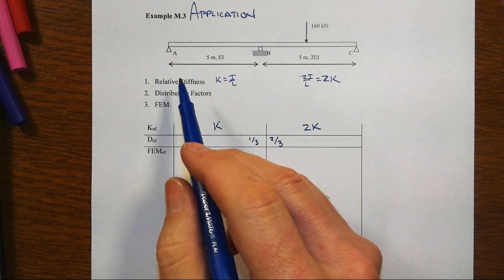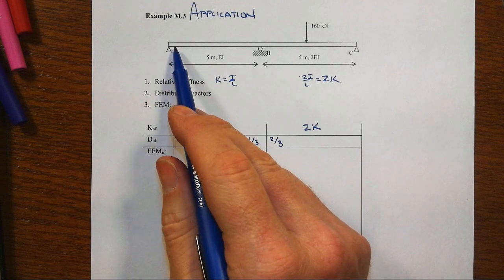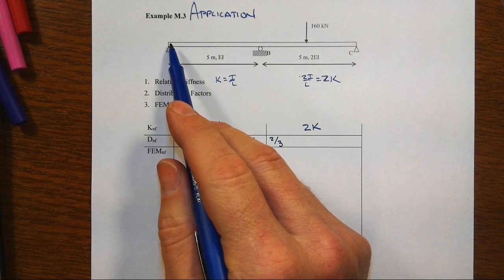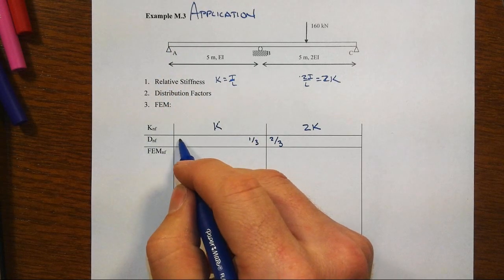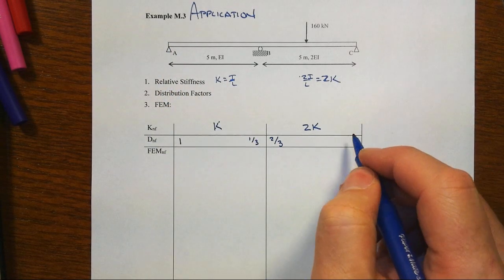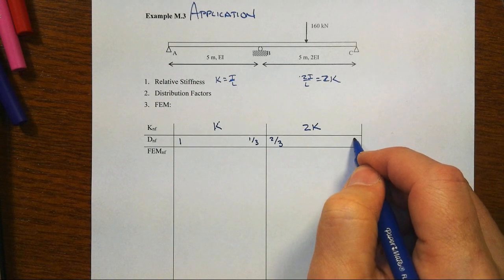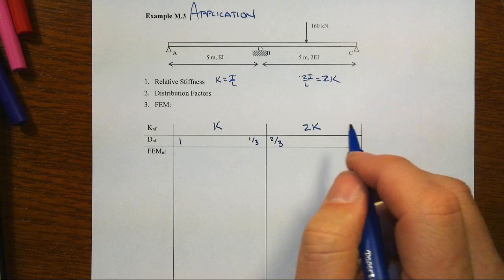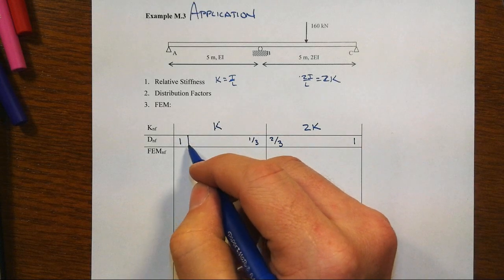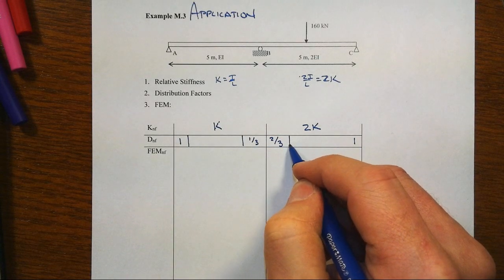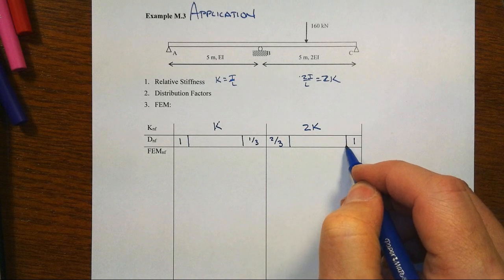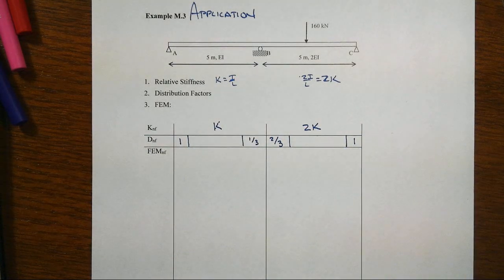Now at this far left end, since it's a pin member and it's only whatever happens here is going to come right back into that member, that distribution factor is K over K. And at the other far end we have then also 2K over 2K or a one. Some people like to also box those to make sure that they aren't thought of as member end moments that we're going to be starting to do next.